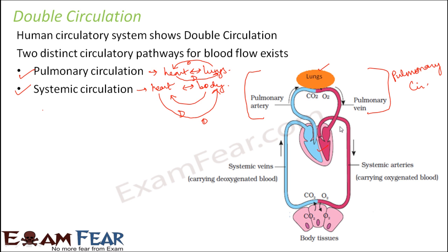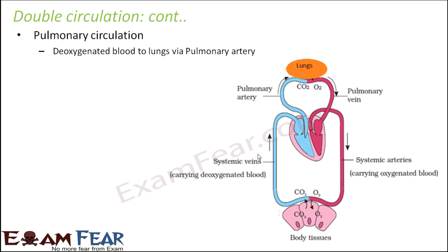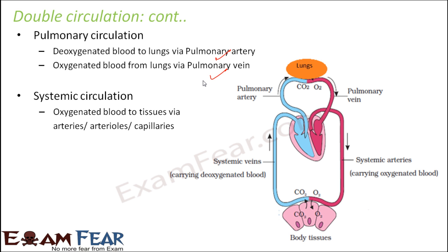Systemic circulation is the other circulatory pathway, where oxygenated blood flows from the heart to the different parts of the body, and deoxygenated blood flows from different parts of the body back to the heart. Oxygenated blood reaches the tissues via arteries, arterioles, and capillaries, while deoxygenated blood returns from tissues via venules, veins, and the vena cava.